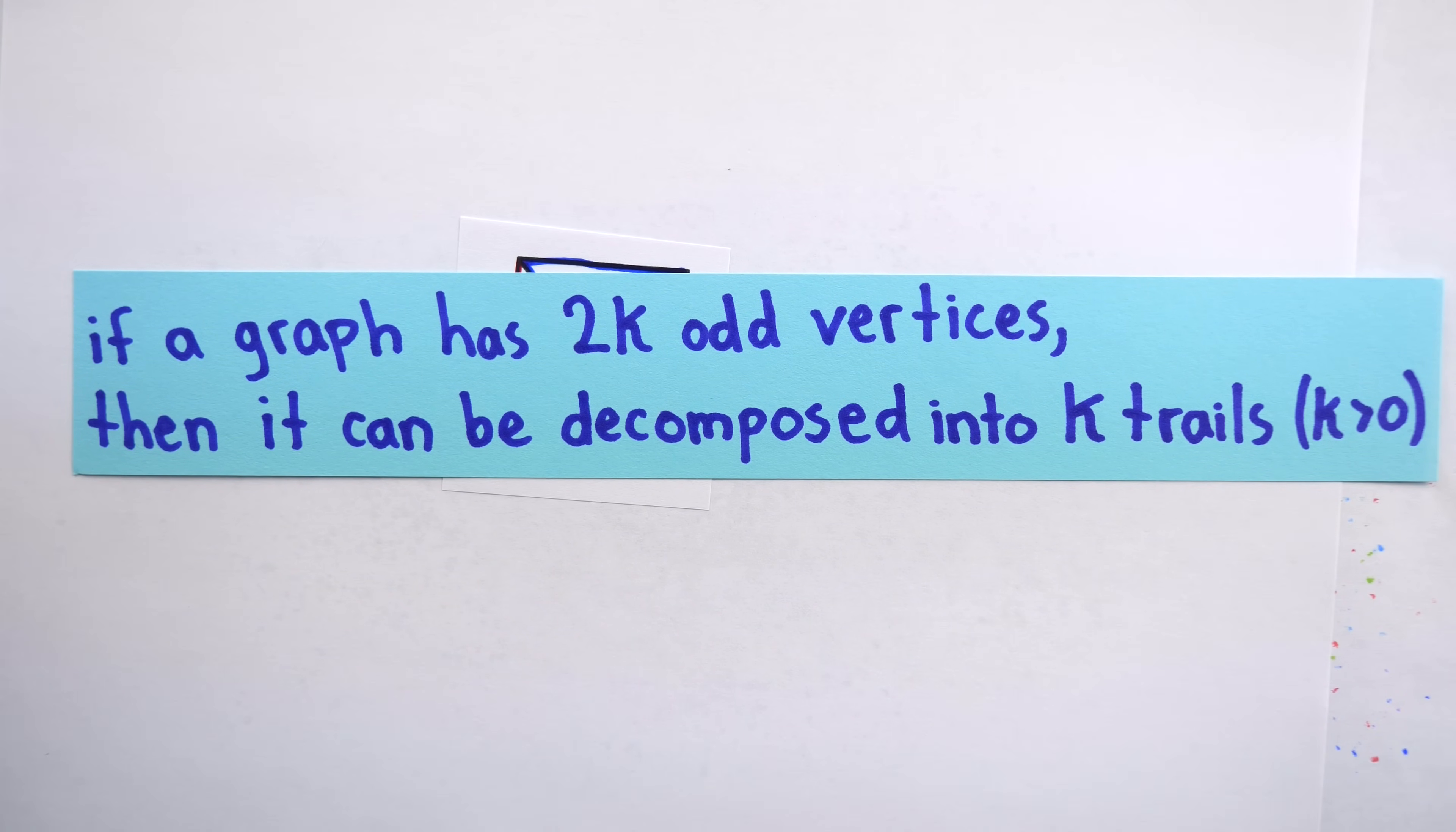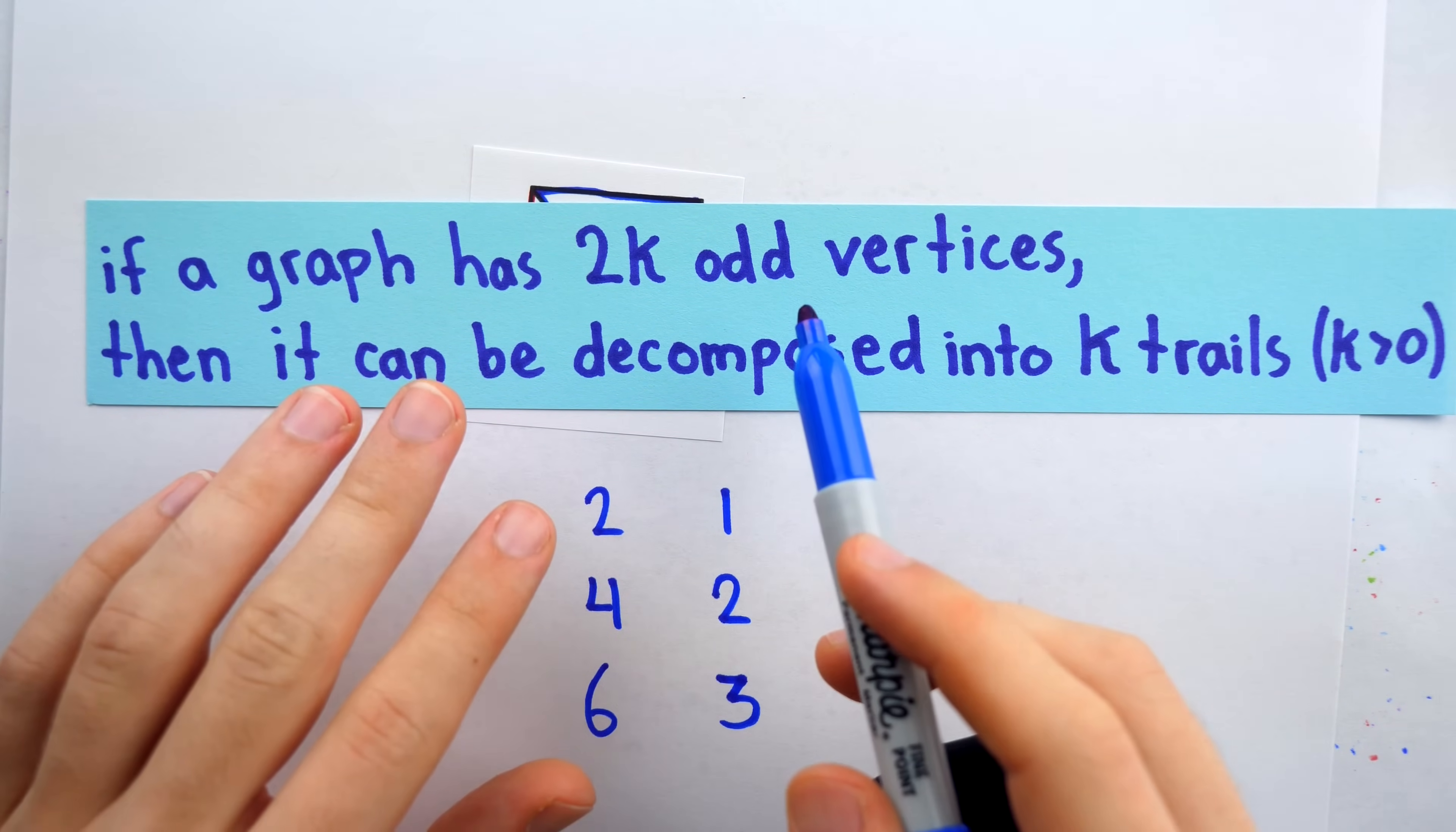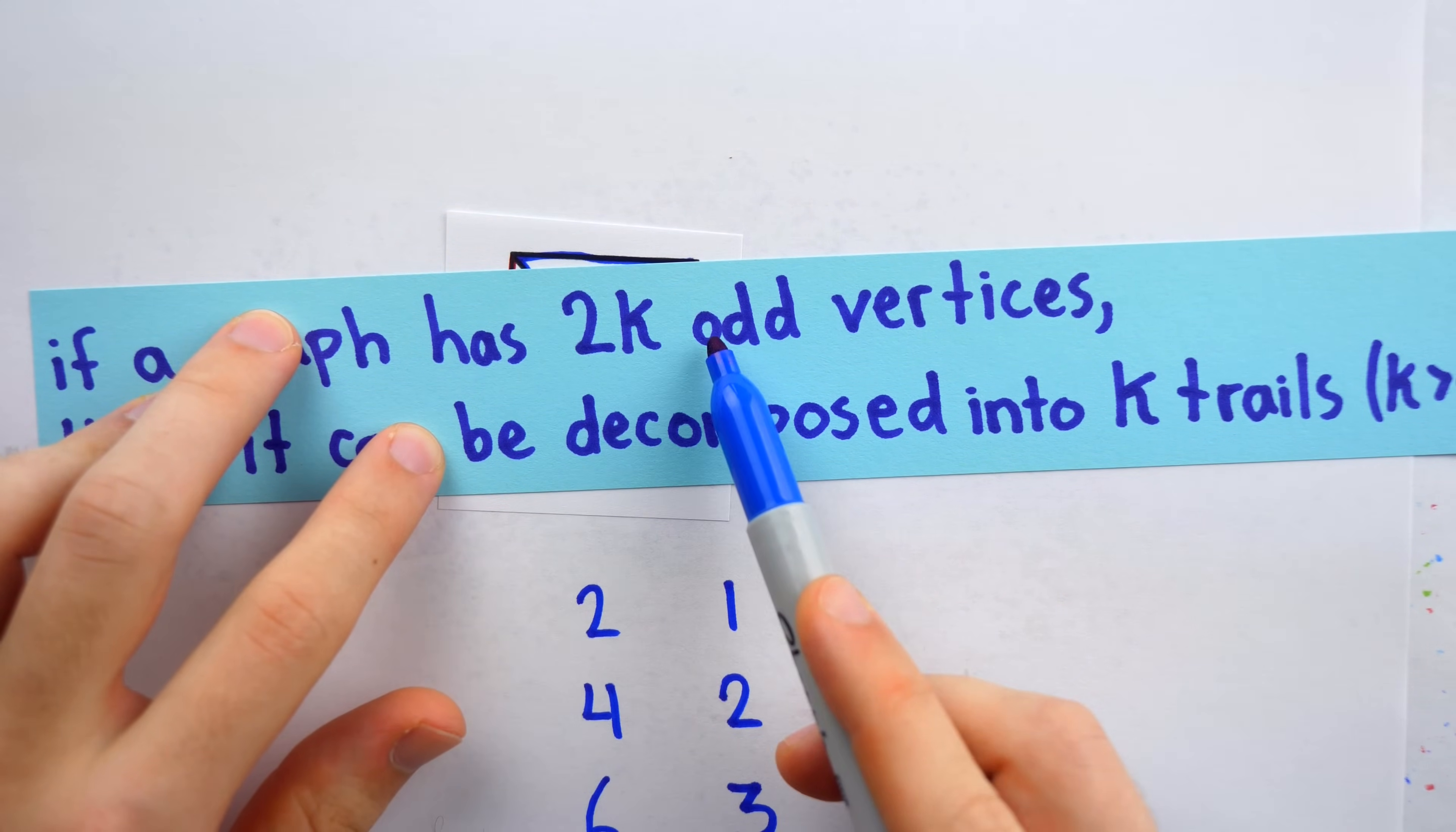So then we might guess that if a graph has 2K odd vertices, then it can be decomposed into K trails where K is greater than zero. Of course, in the case where K equals zero, that's when we get an Eulerian circuit. There are no odd vertices. So we're thinking if a graph has two odd vertices, it can be decomposed into one trail. If it has four odd vertices, it can be decomposed into two trails. If it has six odd vertices, it can be decomposed into three trails and so on. If you're observant, you might be saying, hey, that only addresses graphs with an even number of odd vertices. What if a graph has an odd number of odd vertices? Well, one of the first things you learn in graph theory is that's not possible. So we don't have to worry. A graph can only ever have an even number of odd vertices.